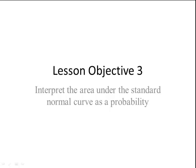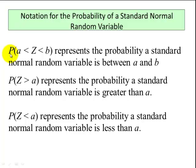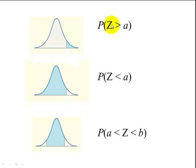Now for lesson objective number 3 — probability notation. When you see P(a < z < b), this means the probability that the z-score is between the values a and b. The notation P(z > a) means the probability of z being greater than a, and P(z < a) is the probability that z is less than a. Looking at pictures: P(z > a) shades the region to the right of a; P(z < a) shades the area to the left of a; and P(a < z < b) shades the region between a and b.